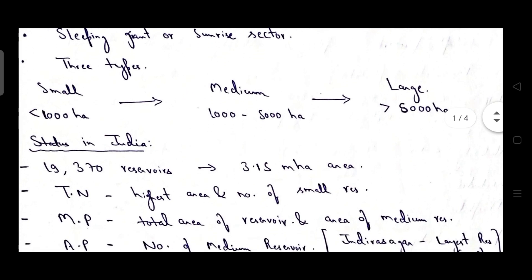Then there are three types of reservoirs. Small reservoir with an area of less than 1000 hectare. Medium reservoir with an area of 1000 to 5000 hectare. And large reservoir with an area greater than 5000 hectare.